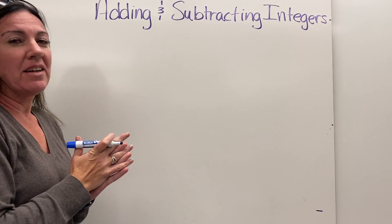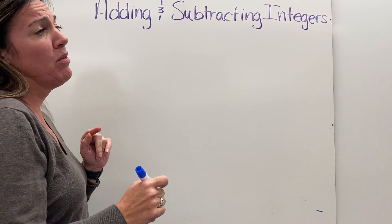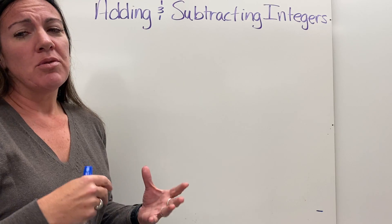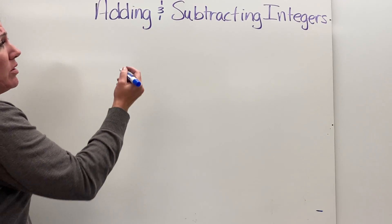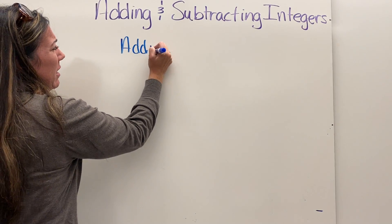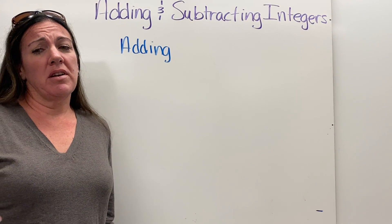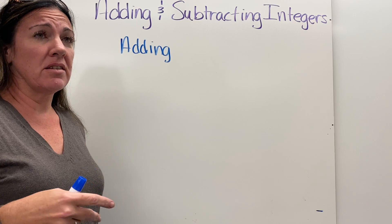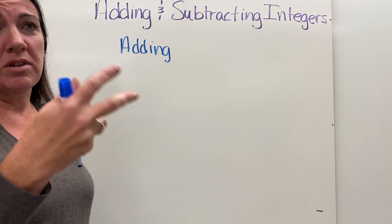Today we're going to do adding and subtracting integers. Integers are whole numbers and their opposites, so we're looking at adding and subtracting positive and negative numbers. When adding, you approach it in two different ways depending on whether the two numbers have the same sign — both positive or both negative — or different signs, one positive and one negative.